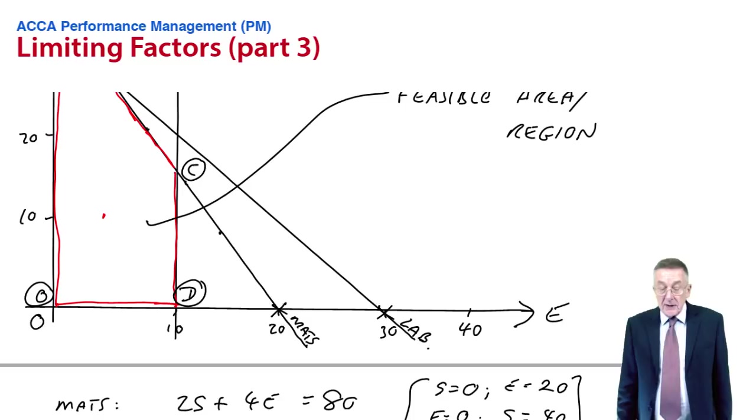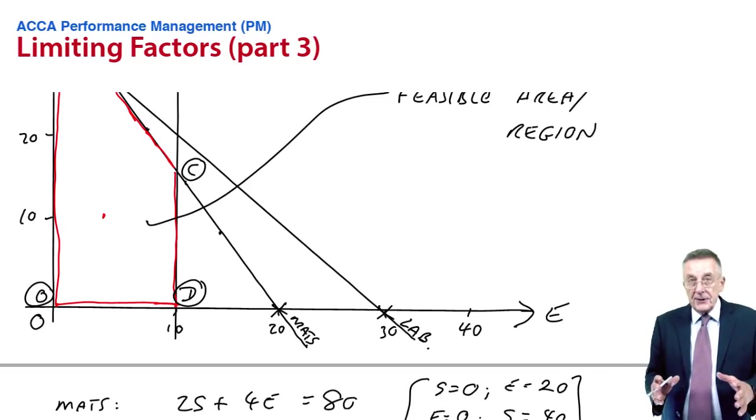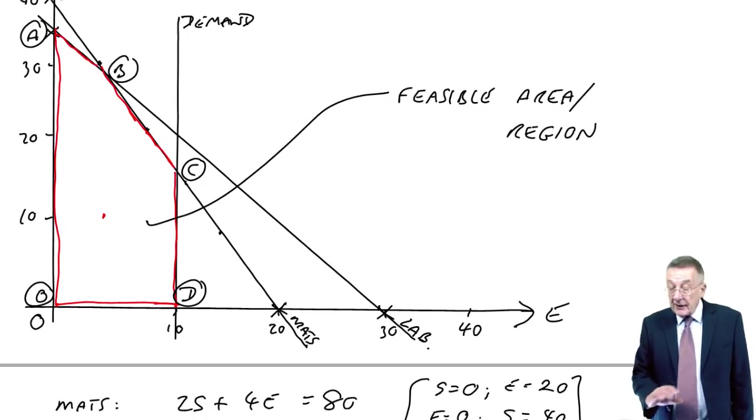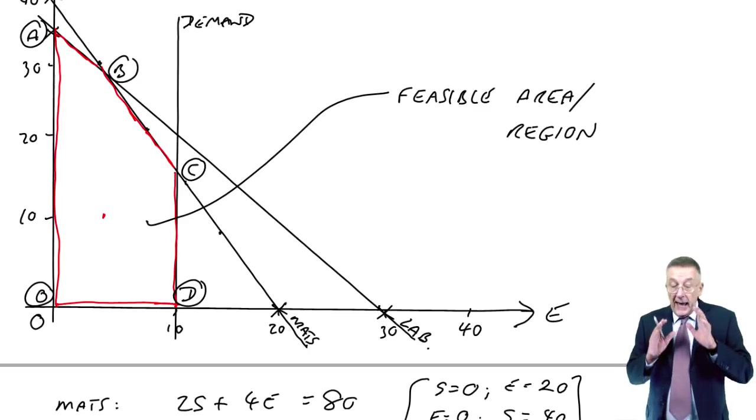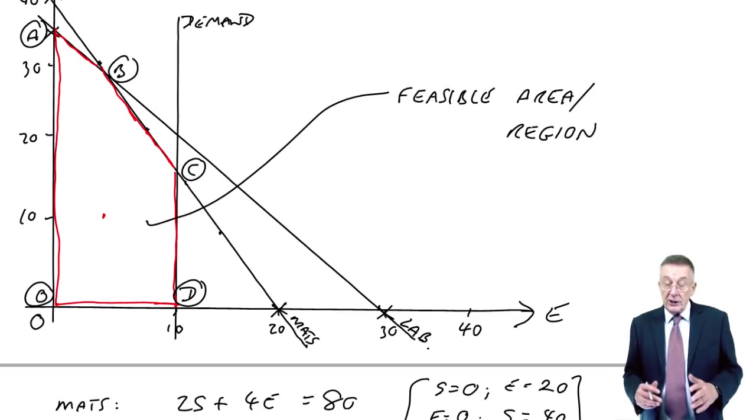And I hope you remember where we're up to, that we set up the equations for the constraints and for our objective, and we put the constraints on a graph. So any answer must be inside or on the edge of that red area, the feasible region.